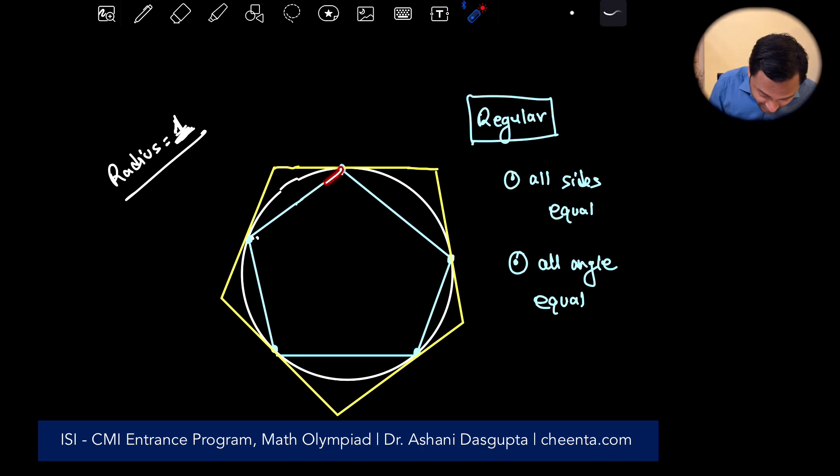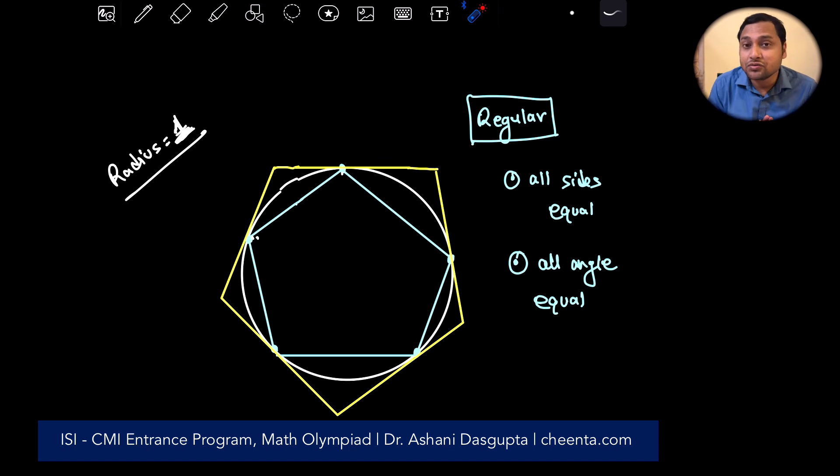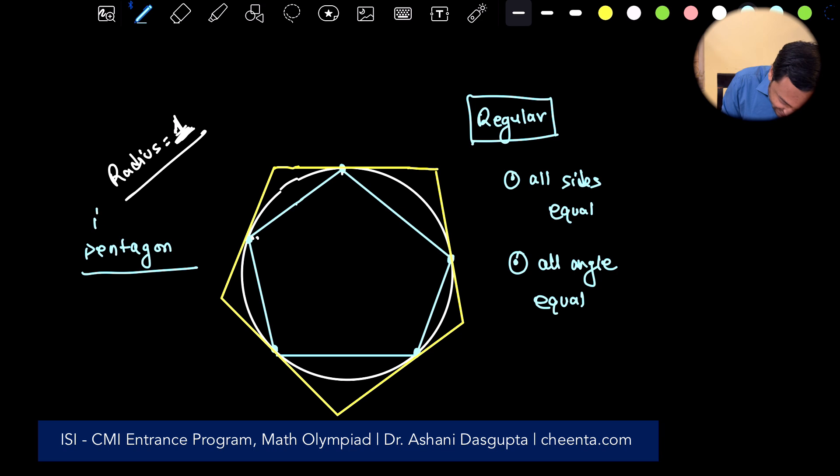So there is a pentagon inside the circle. There is a pentagon outside the circle. What we want to do is to find out the ratio of areas, the ratio of areas of these two pentagons. So the ratio of the inscribed pentagon divided by the circumscribed pentagon. How do we find this ratio?